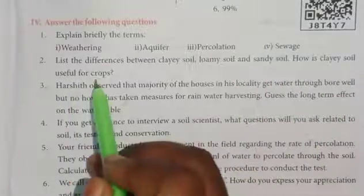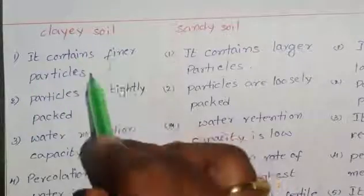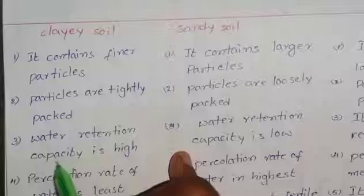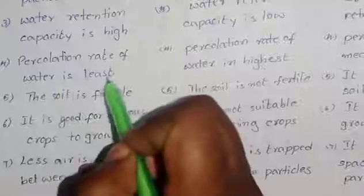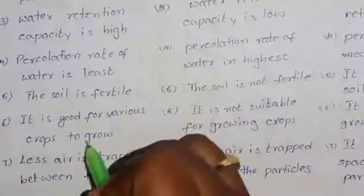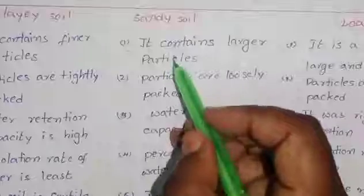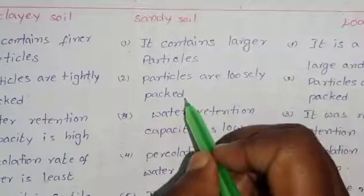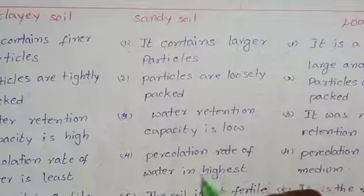Clay soil: it contains finer particles, particles are tightly packed, water retention capacity is high, percolation rate of water is least, the soil is fertile, and it is good for various crops to grow. Less air is trapped between the particles. Sandy soil: it contains larger particles, particles are loosely packed, water retention capacity is low, percolation rate of water is high.